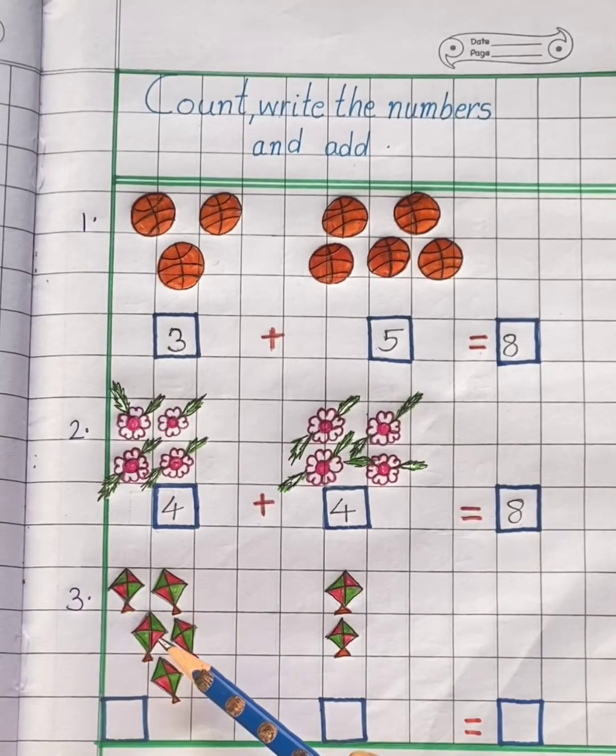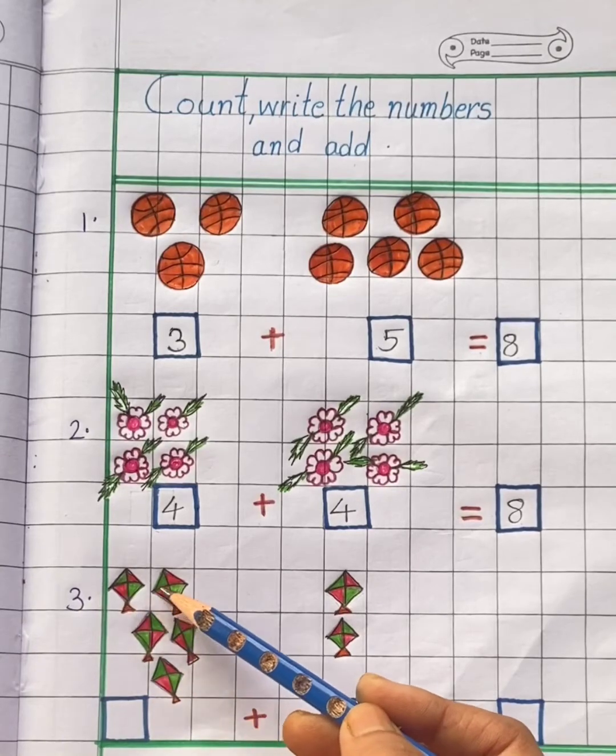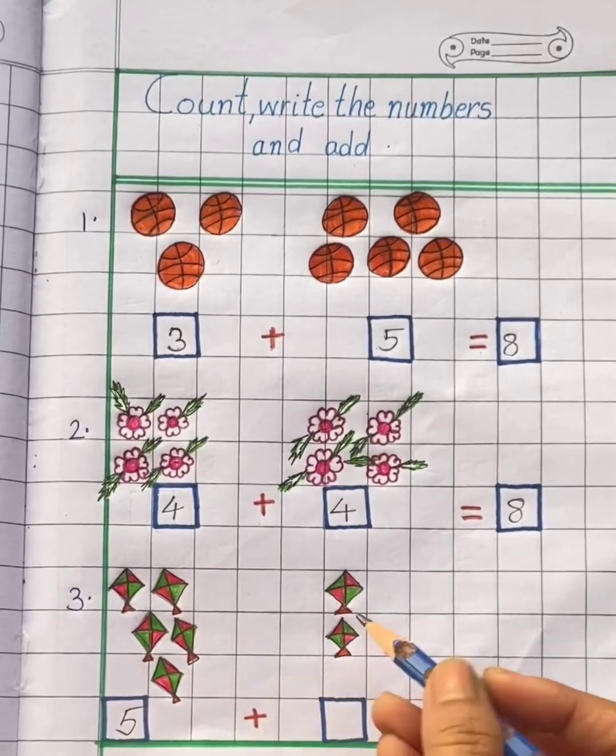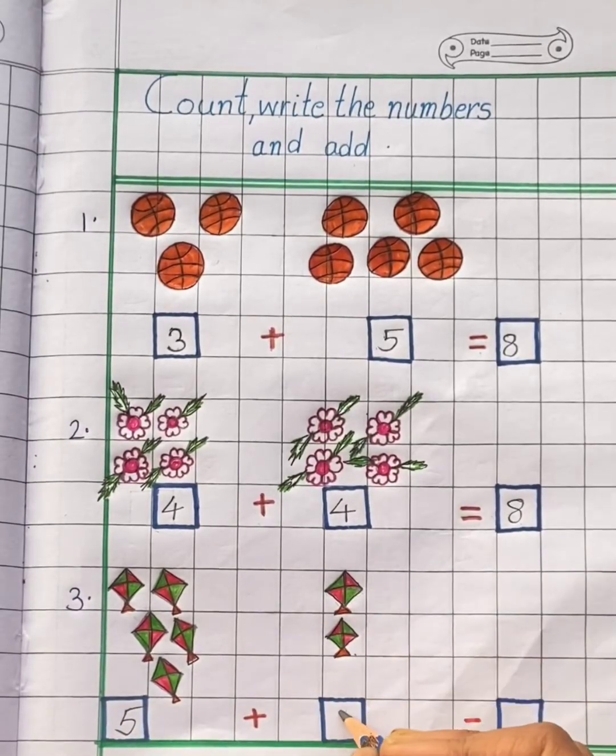Now look here. Here we have 1, 2, 3, 4, 5. 5 kites. And here we have 1, 2. 2 kites.